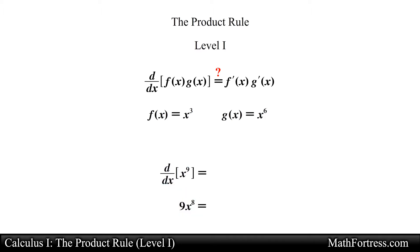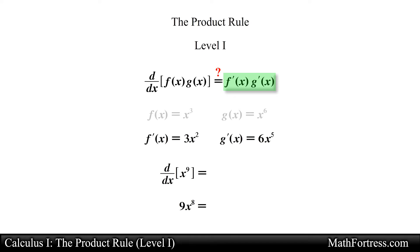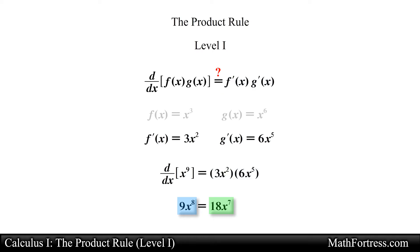Now let's verify the right side of this expression, so we go ahead and take the derivative of f and g as follows. Now if we were to multiply them we should obtain 9x raised to the power of 8, but unfortunately we obtain something completely different — in this case 18x raised to the power of 7.